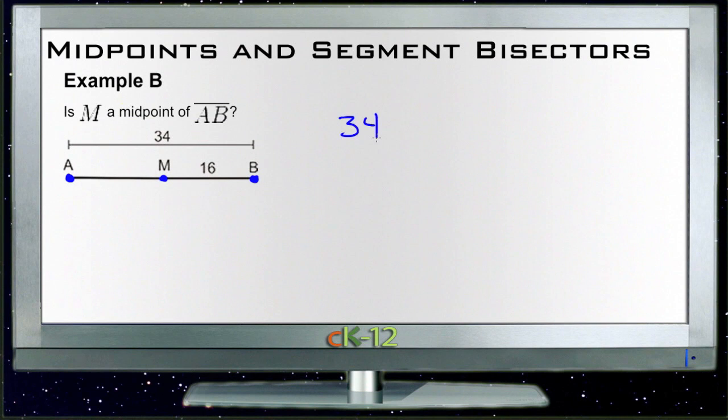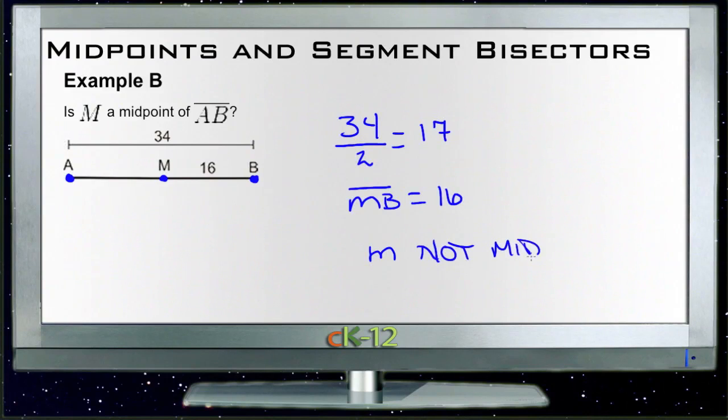But the problem is that we know that line segment AB is 34 units long. So if we were to find the midpoint of that, then we'd divide that by 2. 34 divided by 2 is 17. So it would need to be 17 units from each end. And since MB, line segment MB, is 16 units and not 17 units, then M is not the midpoint. It would have to be at 17 rather than 16.